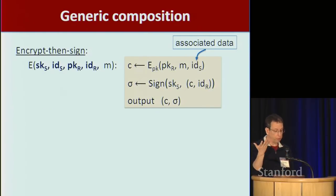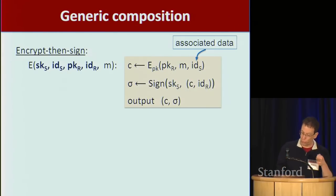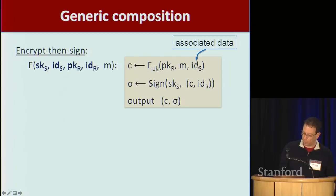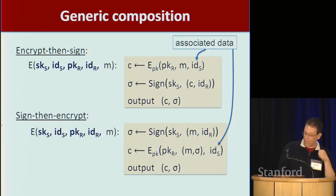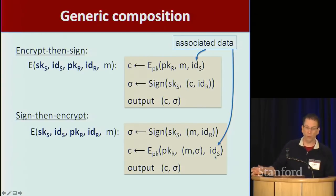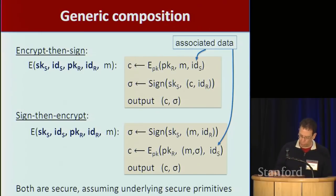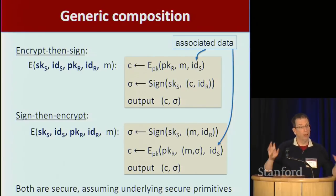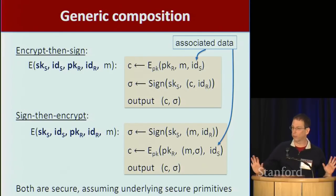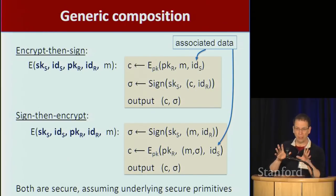How do you construct sign-encryption? Again, there's a generic composition construction. You can do encrypt-then-sign, where you encrypt your message and then sign the ciphertext, embedding identities appropriately. Or you can do sign-then-encrypt, where you sign the message first and then encrypt. Which one is secure? It turns out both are secure, assuming the underlying primitives are secure. For sign-encryption, we're not that sensitive to the order. However, you have to implement things correctly. Even when you do generic composition in crypto, you have to implement things correctly. Let me show you what I consider one of the most beautiful mistakes I've seen in crypto.